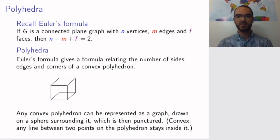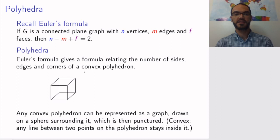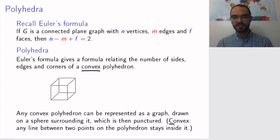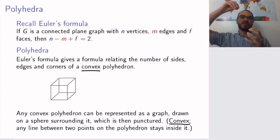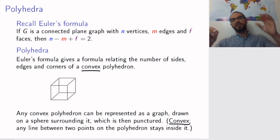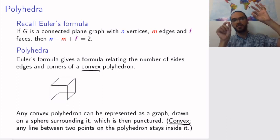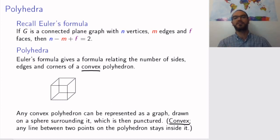Thanks to Euler's formula we can count the number of sides, edges and corners of a convex polyhedron. The word convex here is a technical detail, but quite an important one. It just means that there are no bulges on the solid. More precisely, if you draw a line between any two points on your polyhedron, this line segment will entirely stay inside the polyhedron.